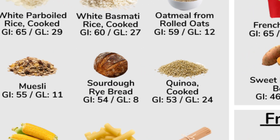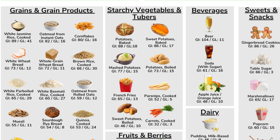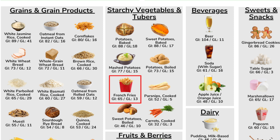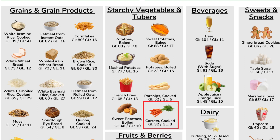Underneath each food you see two numbers: GI (glycemic index), which we're focusing on now, and GL (glycemic load), which we'll talk about next. Another category with many high glycemic index foods is tubers. Baked white or sweet potatoes come in at 88, mashed potatoes at 77, and french fries at 65. Lower glycemic index options in this category include boiled sweet potatoes at 46 and carrots at 32.